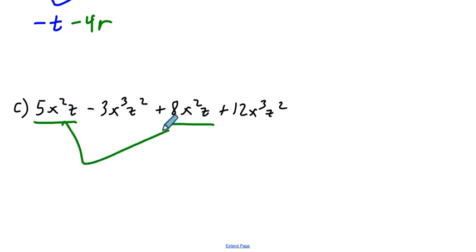So since those are the same, I have 5 of them, and I have 8 more. So I have 13 total x squared z's right there. Do you see that? 8 plus 5 is 13.